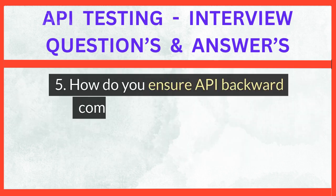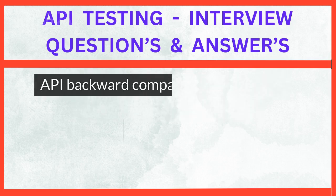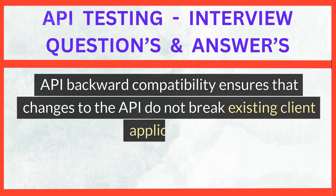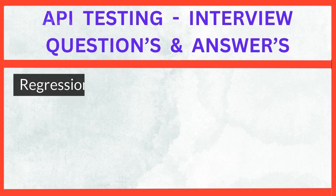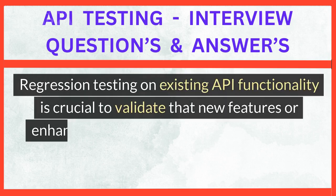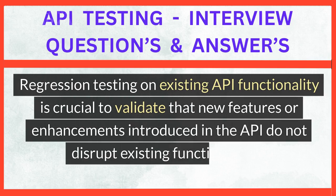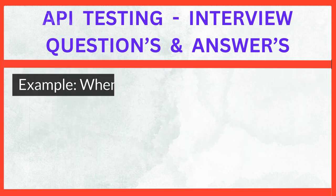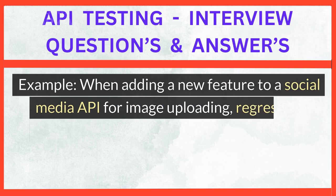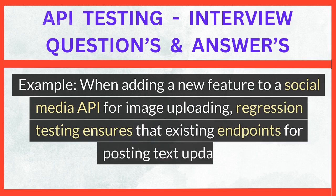How do you ensure API backward compatibility during testing? API backward compatibility ensures that changes to the API do not break existing client applications. Regression testing on existing API functionality is crucial to validate that new features or enhancements do not disrupt existing functionalities. For example, when adding a new feature to a social media API for image uploading, regression testing ensures that existing endpoints for posting text updates remain functional.